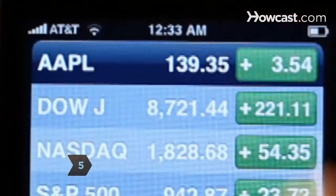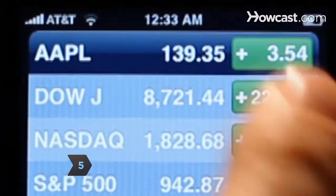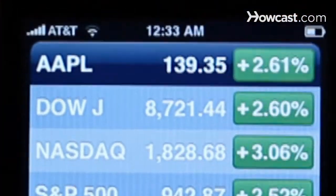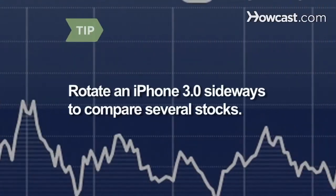Step 5: Depending on your reading preferences, tap the percent or numbers buttons to switch the data back and forth. If you have an iPhone 3.0, you can rotate your phone sideways to compare several stocks over a long period of time.